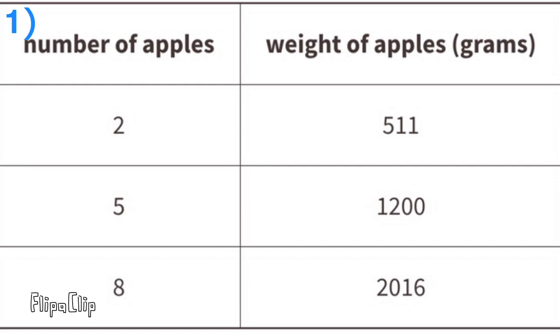7th grade Illustrative Mathematics Unit 6 Lesson 2 practice problems. Number one: the table shows the number of apples and the total weight of the apples. Estimate the weight of six apples. Well, the weight of two apples is 511 grams, and two times three is six, so 511 times three would give you the weight of six apples. Six apples would weigh approximately 1533 grams.